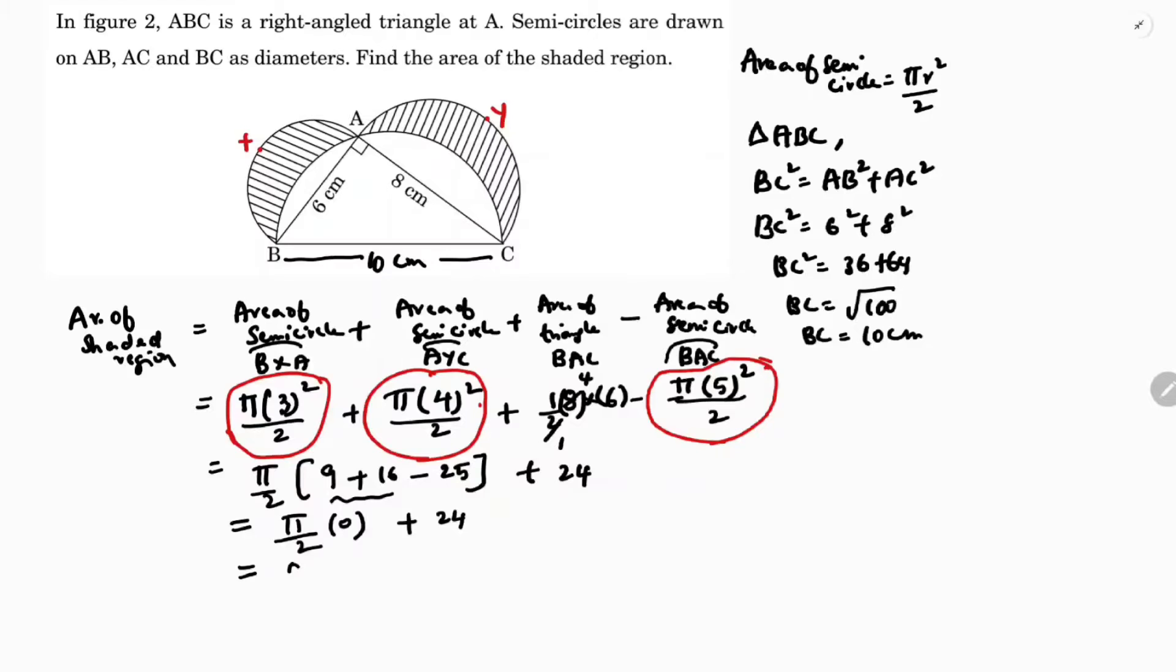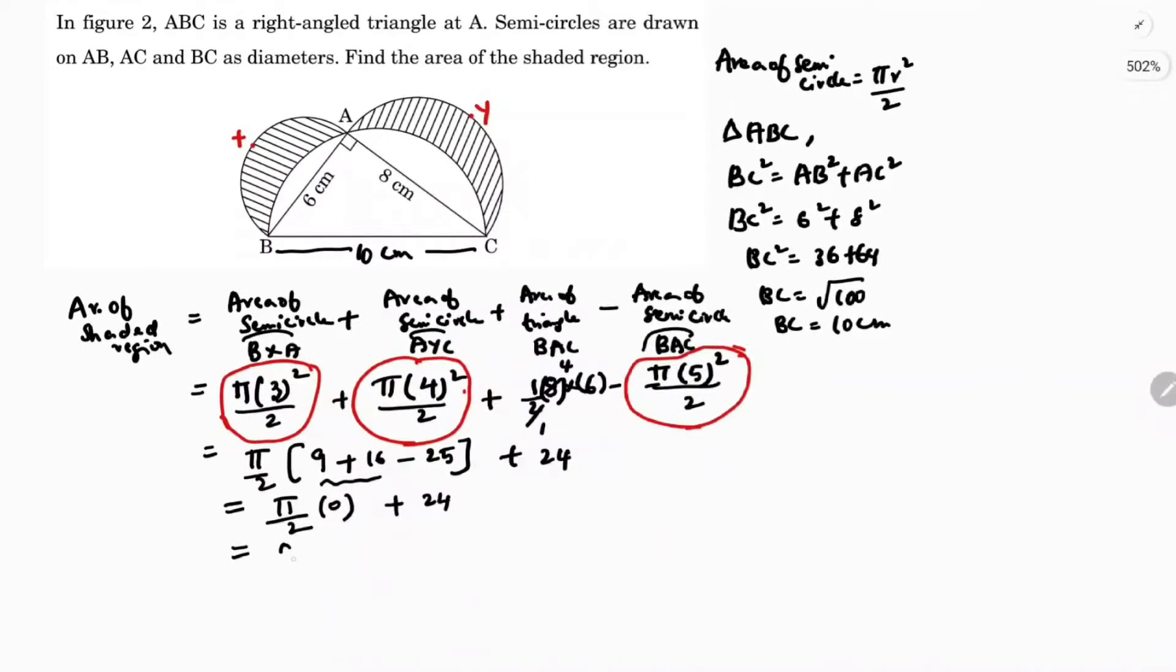0 plus 24, so the answer is 24. Area of shaded region is 24 centimeter square.